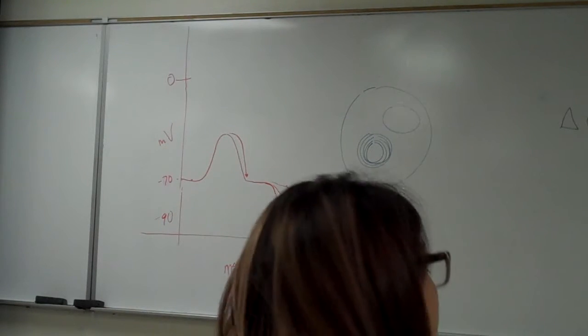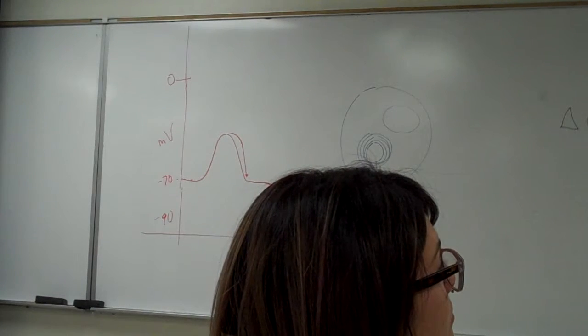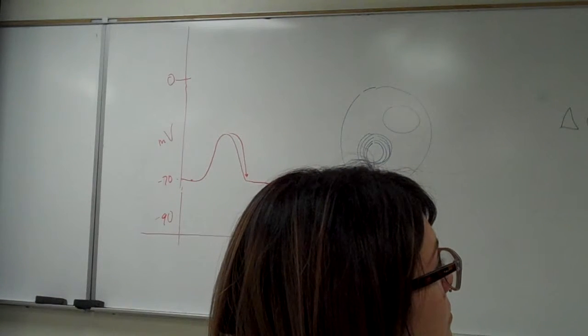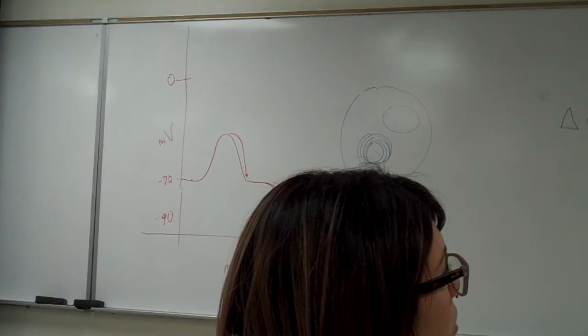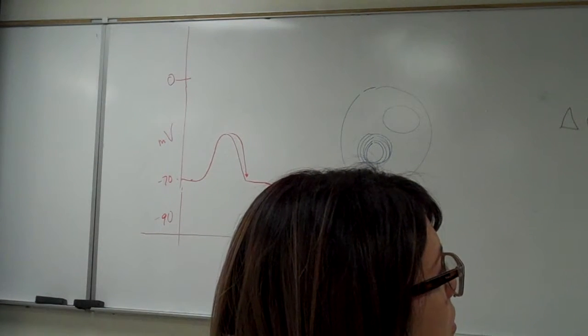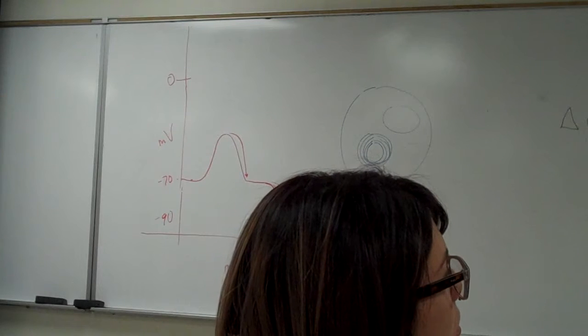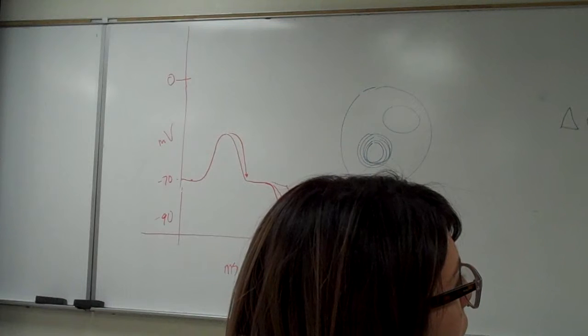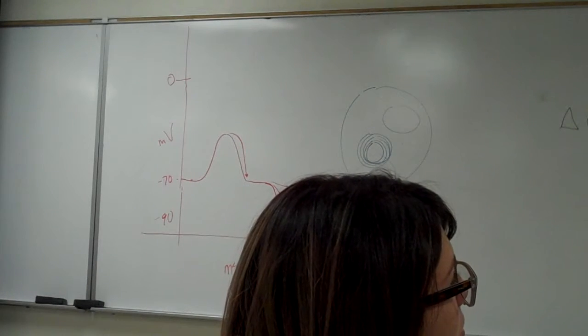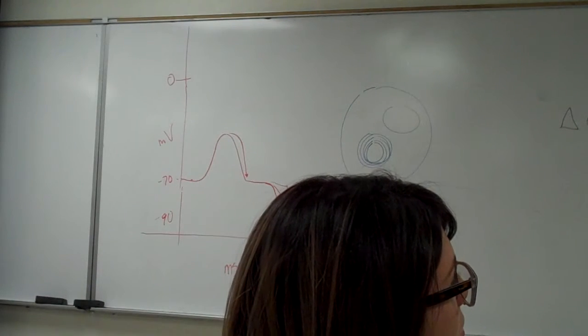And the how? How do you generate and propagate an action potential? Self-propagated. What types of channels? Voltage-gated ion channels. Come on. Sodium, potassium, even calcium. Voltage-gated.